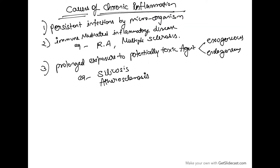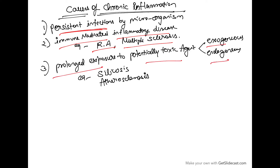The causes of chronic inflammation could be persistent infections, or immune-mediated inflammatory diseases like rheumatoid arthritis or multiple sclerosis, or prolonged exposure to a potentially toxic agent — whether exogenous or endogenous — like in silicosis or ethyl. So the causes are: persistent infection, immune-mediated inflammatory disease, or prolonged exposure to a toxic agent.